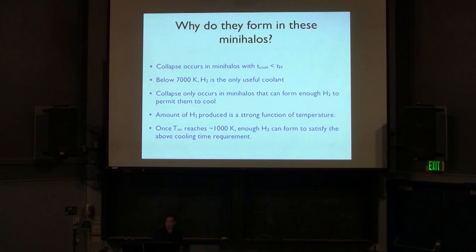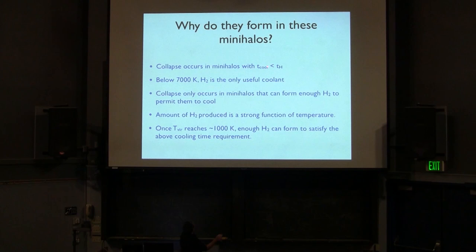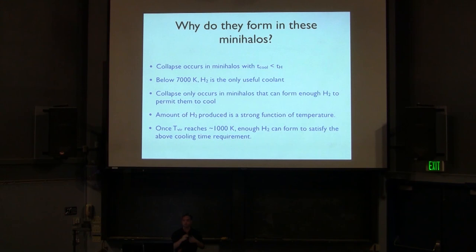For halos of around 10^5 solar masses, the condition is that the cooling time must be less than the Hubble time. Below 7000 K, H2 is the only useful coolant. You have to form enough H2 to satisfy this cooling criterion. It turns out that at around 1000 K you start to create H2 fast enough to begin cooling — and 1000 K corresponds to a mini-halo of around 10^5 solar masses. A 10^4 solar mass halo would have a virial temperature of ~500 K, not form enough H2, and its cooling time would exceed the Hubble time.